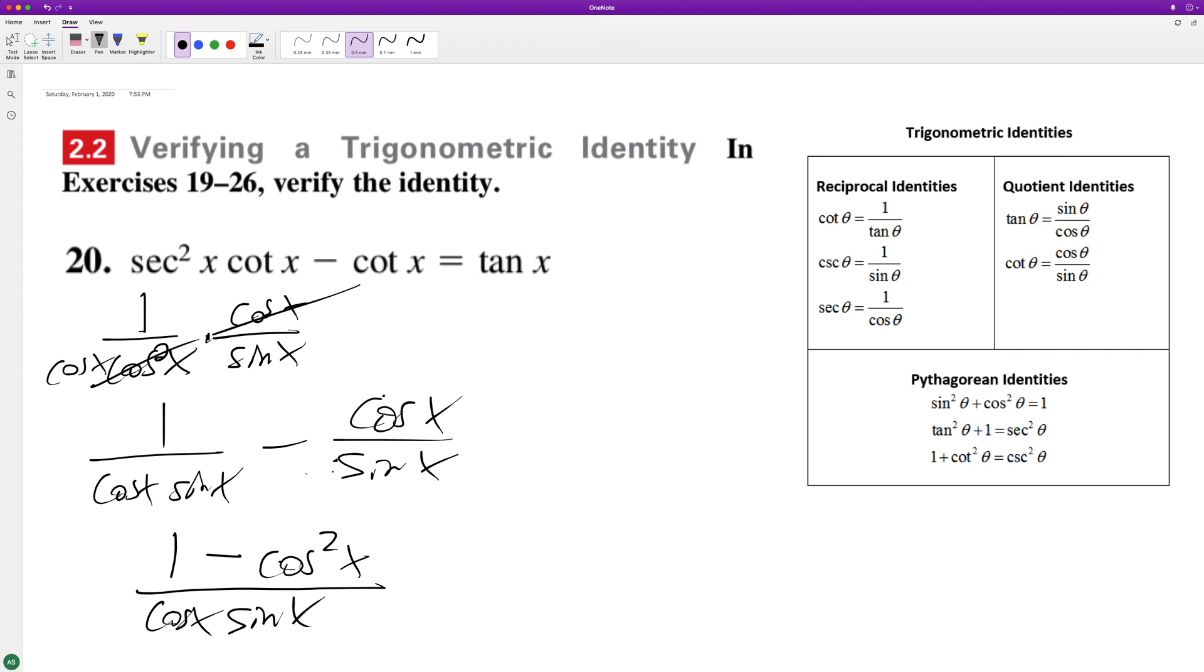So this can be converted into sine squared x on top using this property, over cosine x sine x.